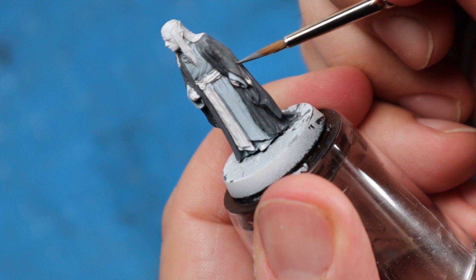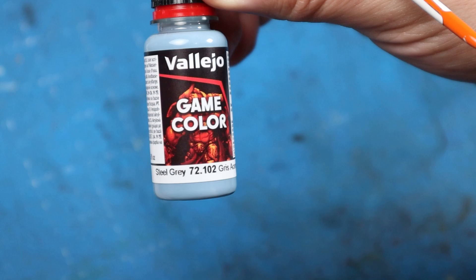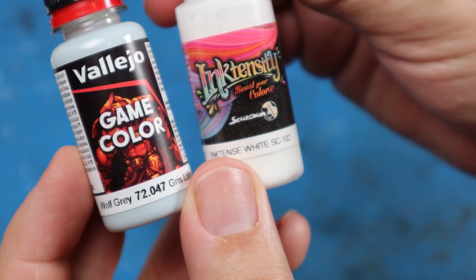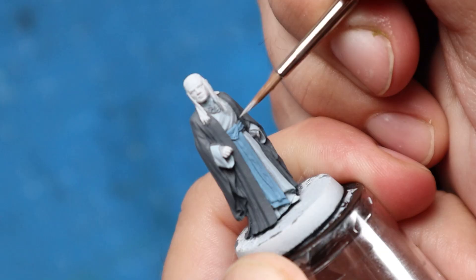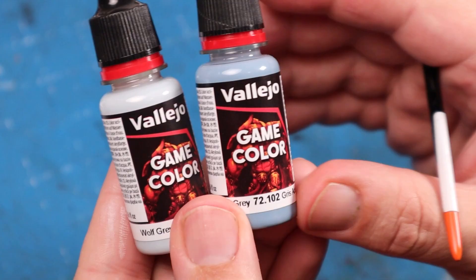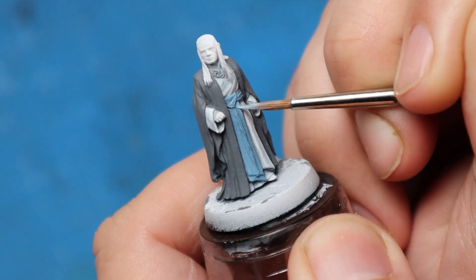For the sash, I used Steel Grey from Vallejo and painted the entirety of the sash area. With the clothing all blocked out with the base colours, I then shifted my attention back to the inner robe, using my Wolf Grey base colour mixed with some intense white ink from Scale 75 to build up the highlights. To highlight the sash, I mixed Steel Grey with Wolf Grey for the first highlight, and then straight Wolf Grey for the final one.